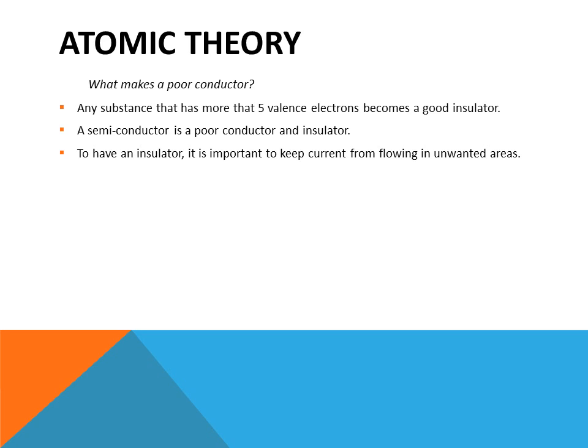What makes poor conductors? Any substance or material that has more than five electrons becomes a good insulator. A semiconductor is a poor conductor and a poor insulator. Insulators are important to keep current from flowing into unwanted areas. Wires are normally coated with some type of insulation material, such as rubber or plastic, which will impede the flow of current through them.